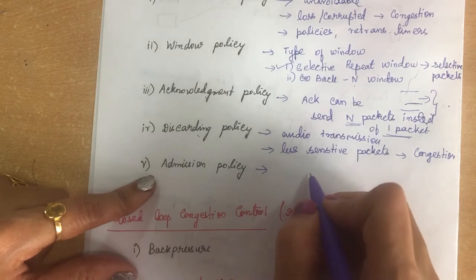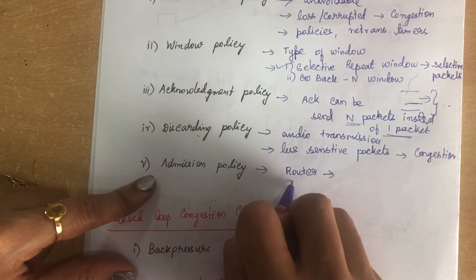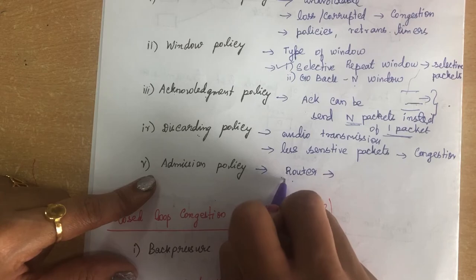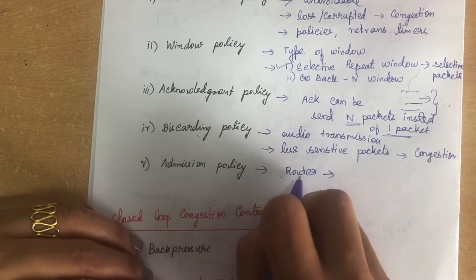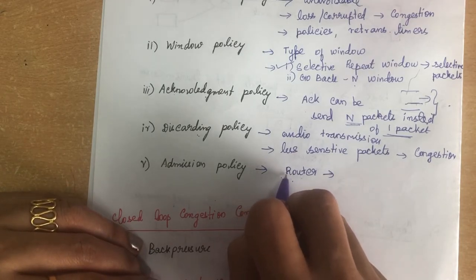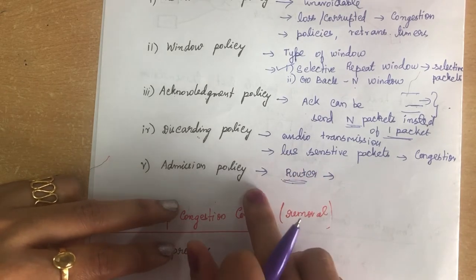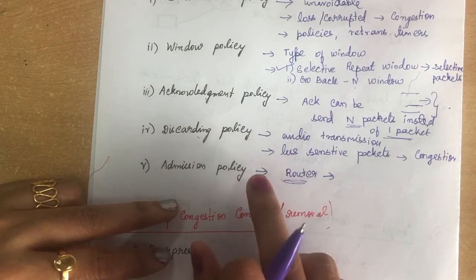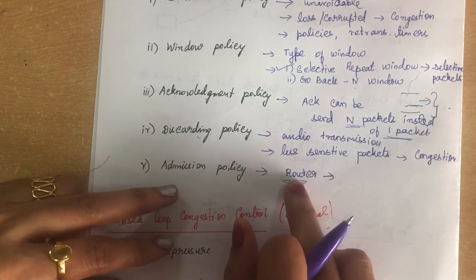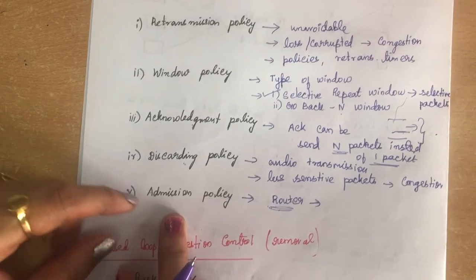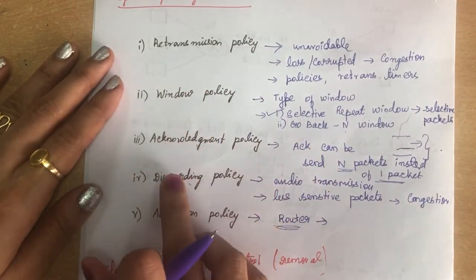Admission policy: the router, while admitting packets, will check whether a packet will induce any congestion inside the network. If it induces congestion, the router will deny that particular packet from being sent inside the router. So there are five types of policies in open loop congestion control: retransmission, window, acknowledgement, discarding, and admission.